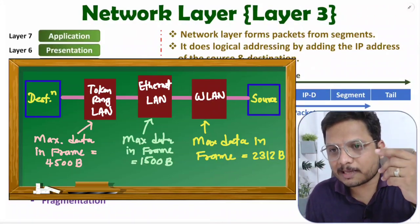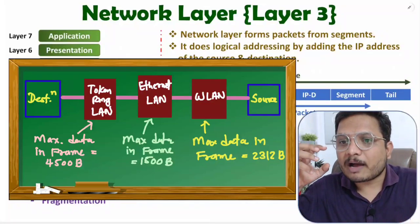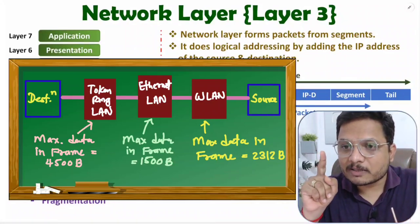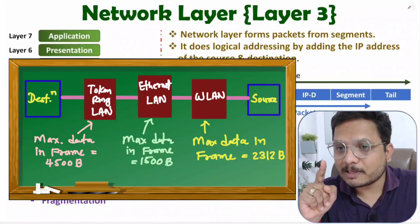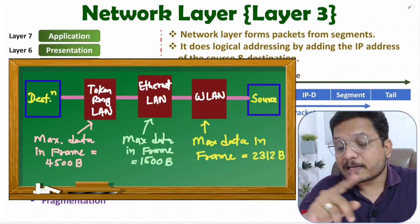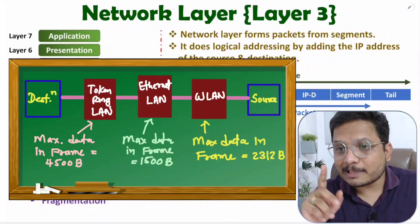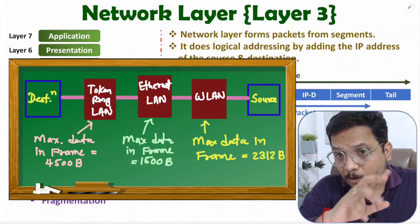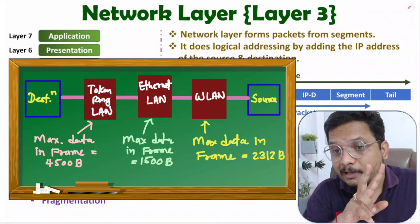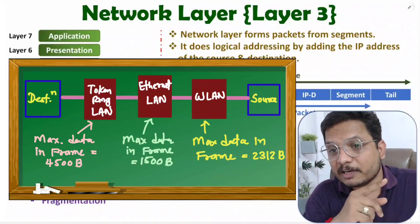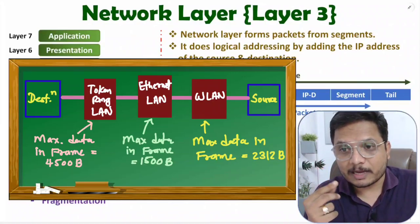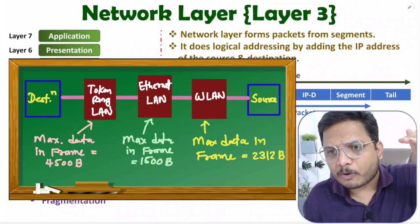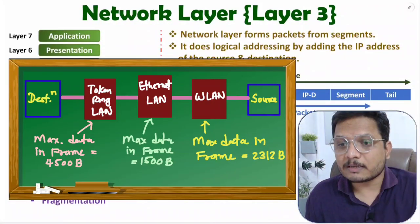So fragmentation occurs at the network layer. For example, if I am using Wi-Fi and my frame has a data size of 1700 bytes, and that Wi-Fi is connected with Ethernet LAN which has a maximum of 1500 bytes, then from one frame of 1700 bytes, two Ethernet frames are formed: one with 1500 bytes and one with 200 bytes. That restructuring of frames across different protocols is called fragmentation.